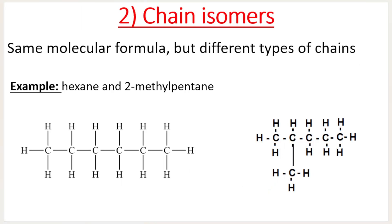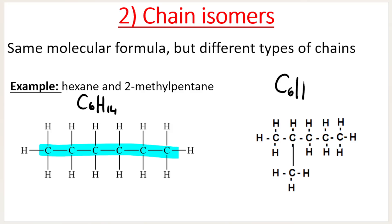Then we have chain isomers — same molecular formula but different types of chains. This one is a straight chain with six carbons: hexane, C6H14. The compound on the right is also C6H14, same molecular formula but a different type of chain. It has five carbons in the main chain and then a methyl branch on the second carbon, so it's a branched alkane but with the same molecular formula.